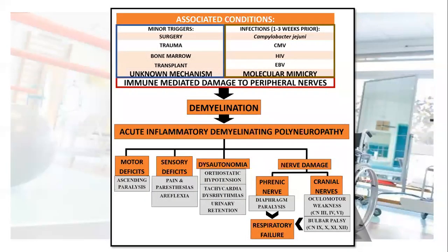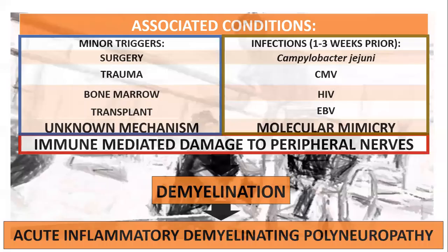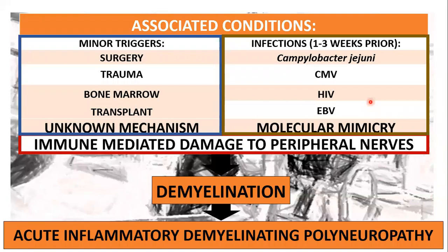This is the overview of the CPC, and we'll be discussing this by section. As for the associated conditions to GBS, these include minor triggers such as surgery, trauma, and bone marrow transplant. All of these have an unknown mechanism for inducing immune-mediated damage to the peripheral nerves.